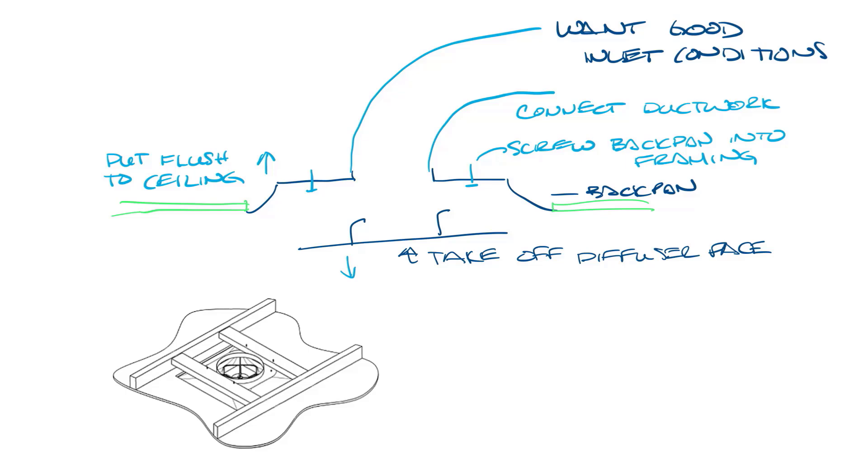So what do you do if the sheetrock ceiling has already been installed and you don't want to have to rip out the ceiling to put in the framing? Well this is where rapid mount frames come in.